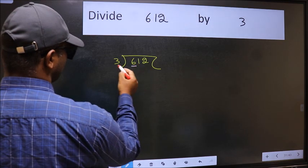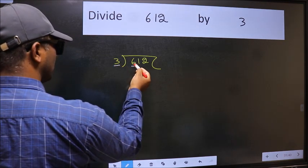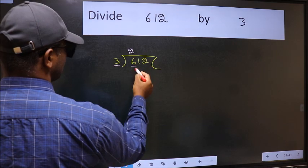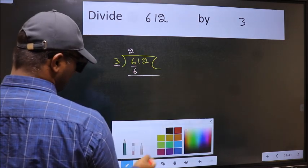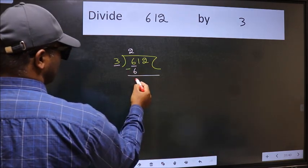Here we have 6 and here 3. When do we get 6 in 3 table? 3 to 6. Now we should subtract. We get 0.